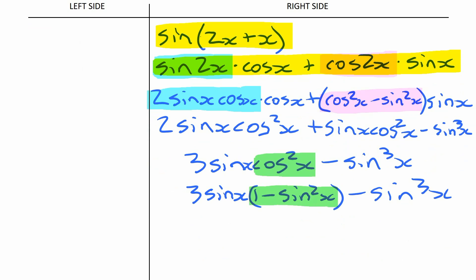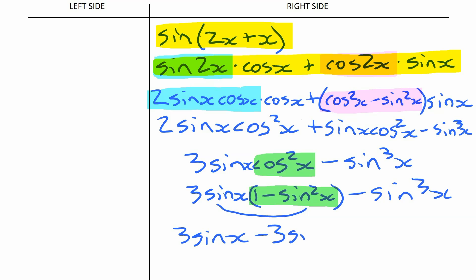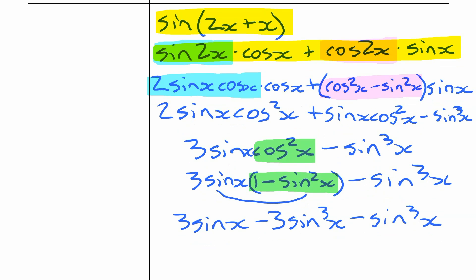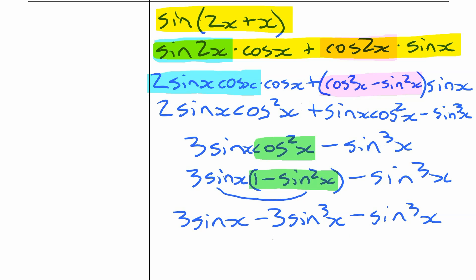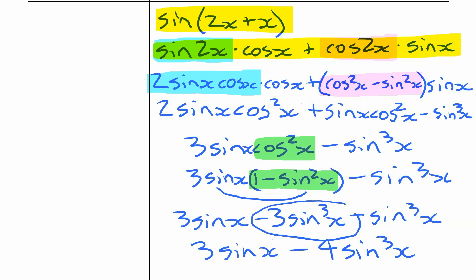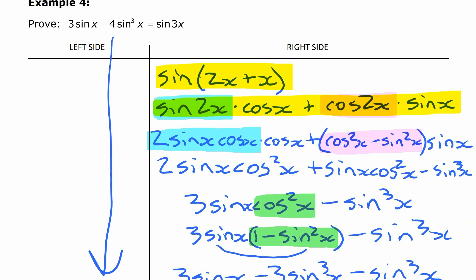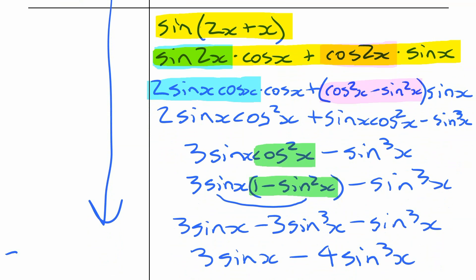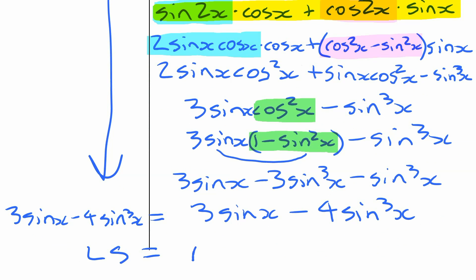So we replace cos squared x with 1 minus sin squared x. Now we have everything in terms of sine. We just are left with multiplying that out: 3 sin x times 1 is 3 sin x, and 3 sin x times minus sin squared x is minus 3 sin cubed x, minus sin cubed x. Then our last step — realizing those are like terms — minus 3 sin cubed x minus sin cubed x makes minus 4 sin cubed x. So we can write this as 3 sin x minus 4 sin cubed x, which is what we have on the other side. Left side equals right side — so we did it.